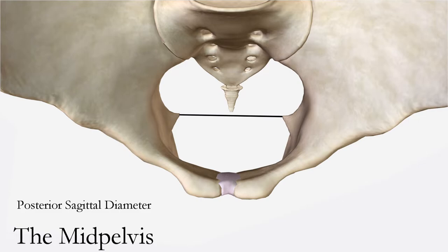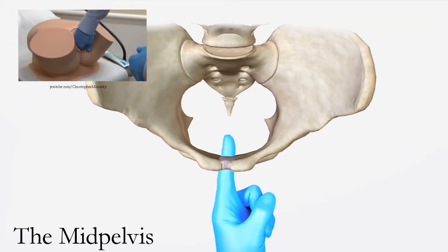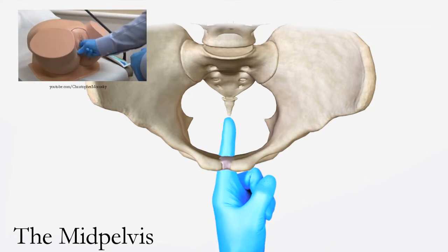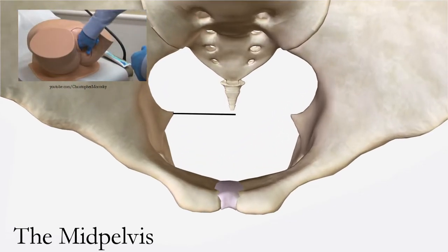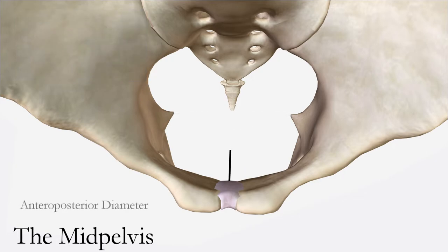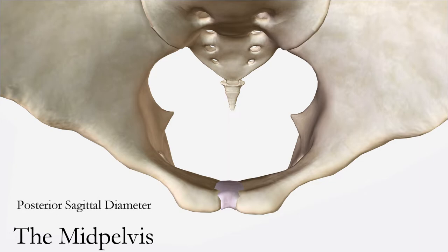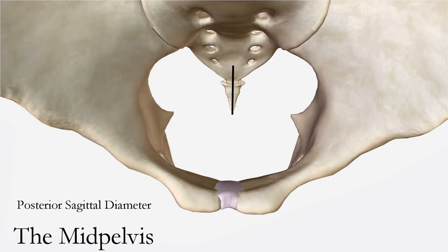The interspinous diameter is considered significant as it is the narrowest pelvic diameter that can be measured. To measure, palpate for the prominences of the ischial spines and measure the distance between them; the average bispinous diameter is 10.5 cm. The anteroposterior diameter of the mid-pelvis is the distance between the inferior margin of the pubis and the junction of the fourth and fifth sacral vertebrae, and should average 12 cm. The posterior sagittal diameter connects the midpoint of the interspinous diameter to the junction of the fourth and fifth sacral vertebrae, averaging 4.5 to 5 cm.